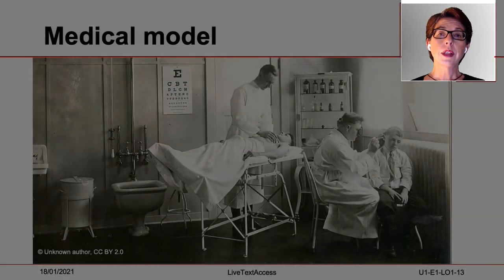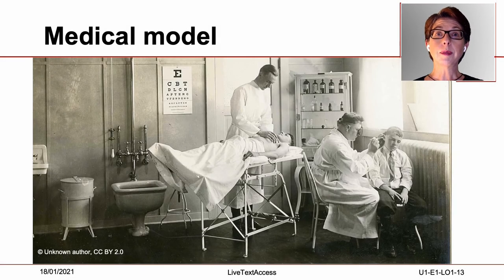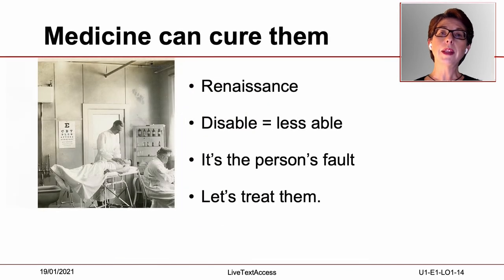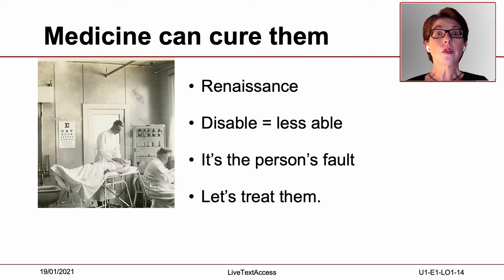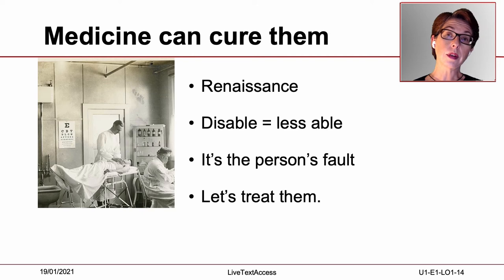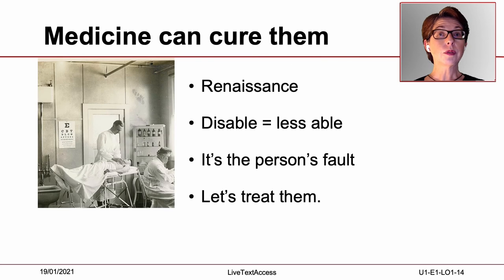Around the 14th century, the understanding of disability changed as society did. During the Renaissance, another individual model emerged: the medical model. The medical model approaches disability as a condition that can be treated or cured. The model considers that it is a person's fault to have an impairment. Persons with an impairment were considered to be less able than persons without an impairment, and society believed that medicine could fix them.